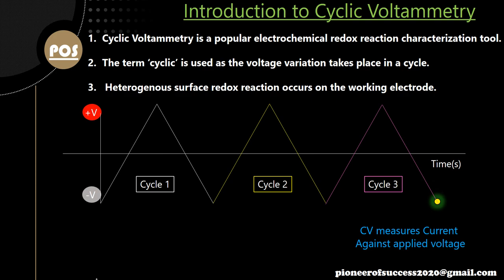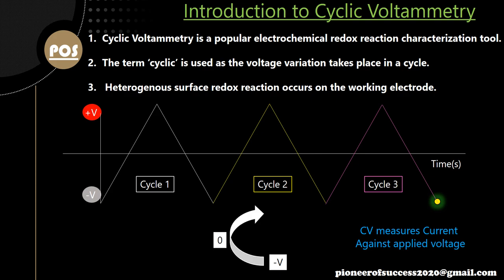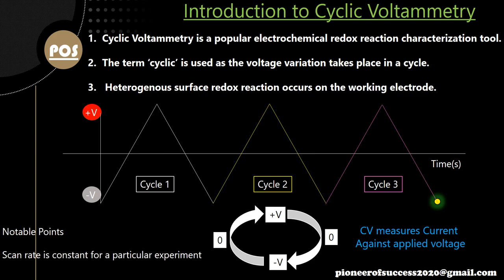CV basically measures current against the applied voltage. Whatever voltage is applied as a function of time on the electrode, we measure some amount of current against it. The voltage starts from minus V, goes to zero, then to plus V, again to zero, and comes back to minus V — completing one cycle. That is why the term 'cyclic' is used.